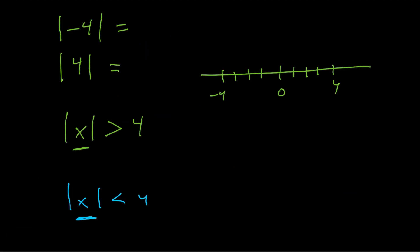The first thing we want to look at is when you take the absolute value of a number — for example, the absolute value of negative four or positive four. When you take the absolute value, it always gives you a positive number, and what it represents is the distance from zero. So you could be four units to the right or four units to the left — both have a distance of four units from zero.